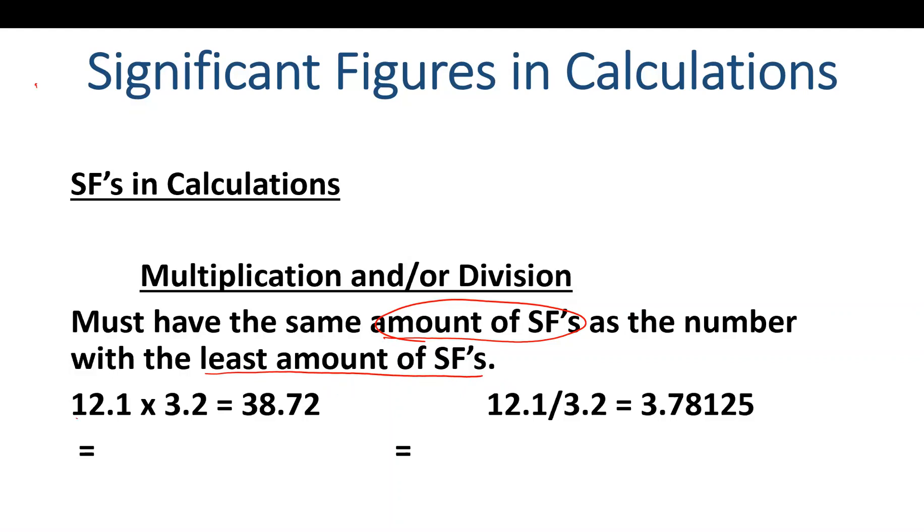If we look at 12.1 times 3.2, we get 38.72. This number actually has four sig figs. Now, if we look at the numbers we begin with, it doesn't make sense if